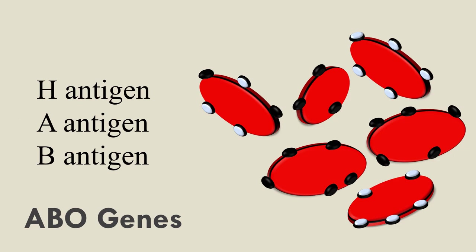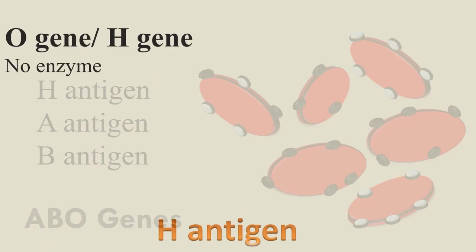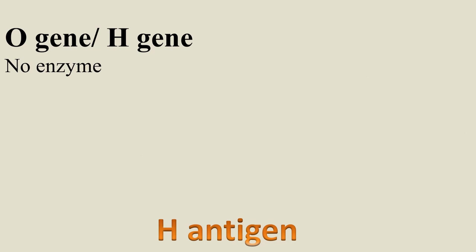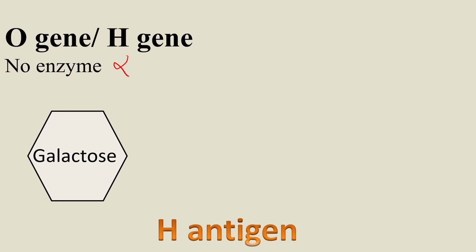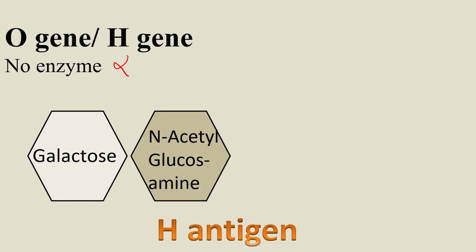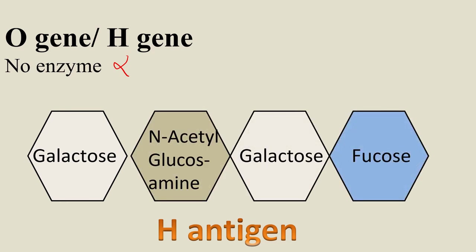All three antigens are encoded by the ABO genes. The O gene or the H gene does not encode for any enzyme. Thus, in the absence of any enzyme, H antigen is formed. Here, we are only showing the carbohydrate side chain of these antigens. The carbohydrate side chain of H antigen contains galactose, N-acetylglucosamine, galactose, and fucose.